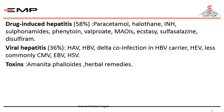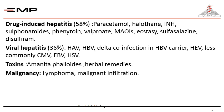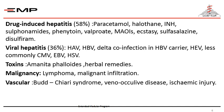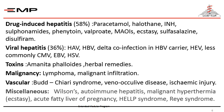Other causes include toxins such as Amanita phalloides and herbal remedies; malignancy such as lymphoma and malignant infiltration of the liver; vascular causes such as Budd-Chiari syndrome, veno-occlusive disease, and ischemic injury; and miscellaneous causes including Wilson's disease, autoimmune hepatitis, malignant hyperthermia, acute fatty liver of pregnancy, HELLP syndrome in pregnancy, and Reye's syndrome.